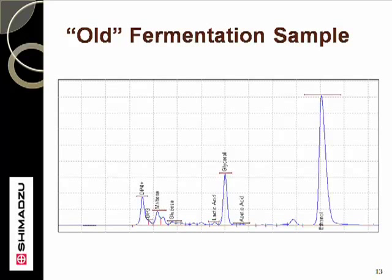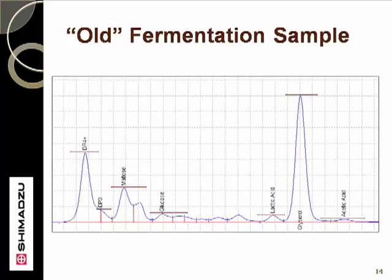Old fermentation samples have nearly run their course. The ethanol is very high and the sugars and starches have been depleted. This produces its own set of challenges in that during the fermentation, very many minor byproducts have been produced, and they represent the bumps in the baseline. With an interest in trying to report a specific number for a specific material, like glucose, the end user may be fooled by these minor byproducts.